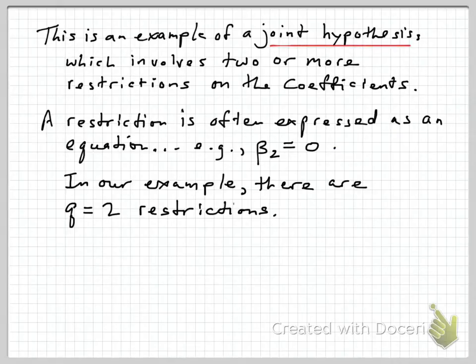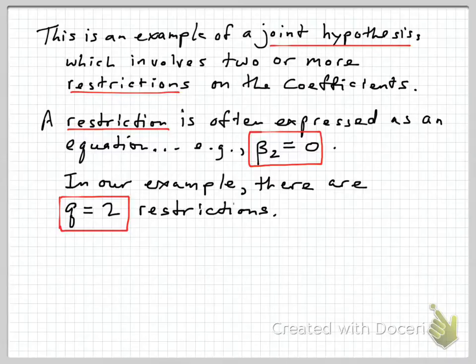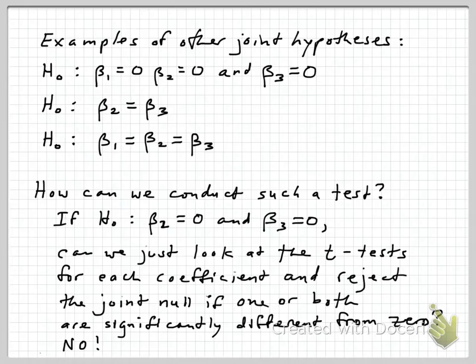This is an example of a joint hypothesis involving two or more restrictions on the coefficients. A restriction is often expressed as an equation. In this case, our hypothesis embodies restricting the possible values of one or more coefficients. Joint hypotheses involve two or more restrictions, and we use the letter Q to indicate the number of restrictions. In this case, we have two restrictions: β₂ = 0 and β₃ = 0.